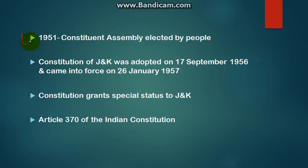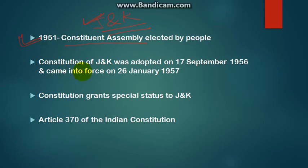First of all, in 1951, a Constituent Assembly was established which would create a separate constitution. This separate constitution is only for J&K. If we talk about Indian states, J&K is just one state which has a separate constitution, whereas other Indian states must follow the Indian Constitution. But J&K's case is something different. The constitution of J&K was adopted on 17th September 1956.